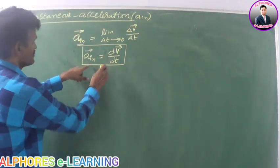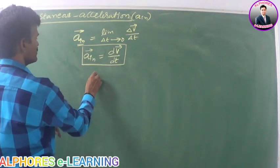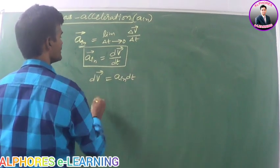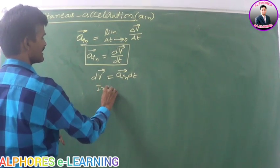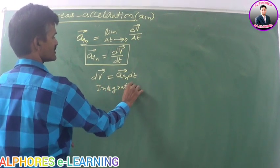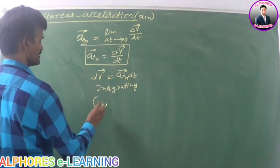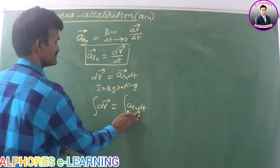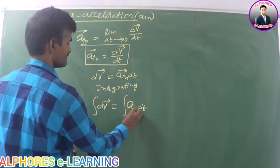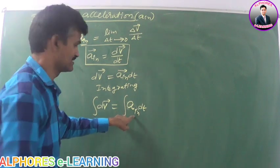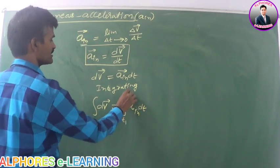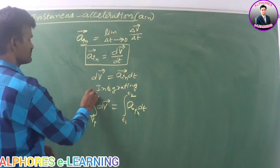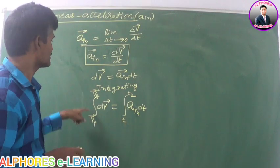On rearranging, dV bar equals instantaneous acceleration into dt. On integrating both sides — integral of dV bar equals integral of instantaneous acceleration into dt — with velocity changing from initial velocity to final velocity and time varying from t1 to t2. This is the instantaneous acceleration expressed in integral form.